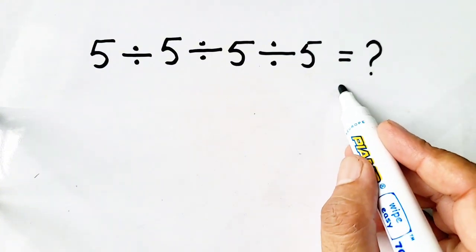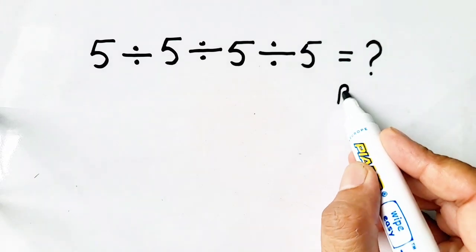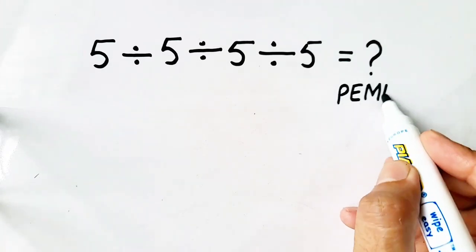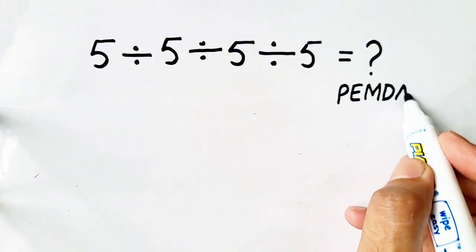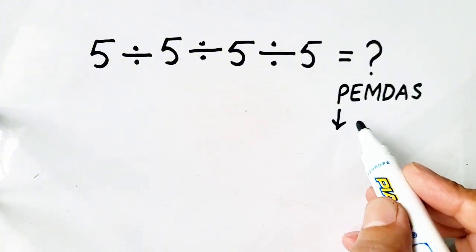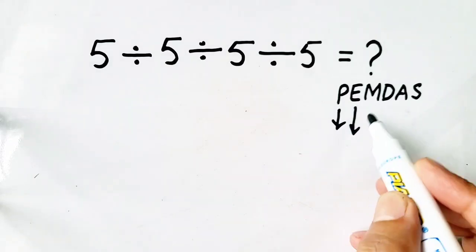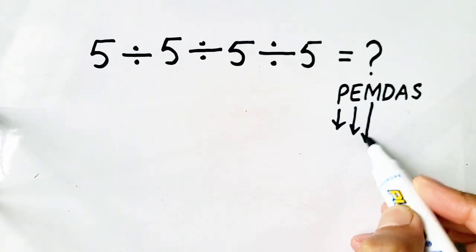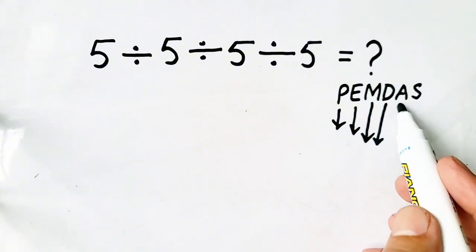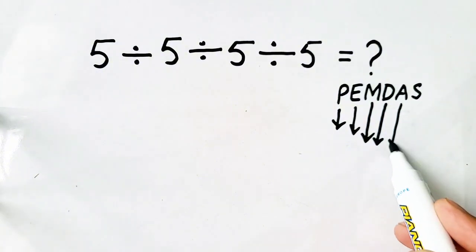We have a rule. The PEMDAS rule. Here P stands for parentheses, E for exponent, M and D stands for multiplication and division, and A and S for addition and subtraction.